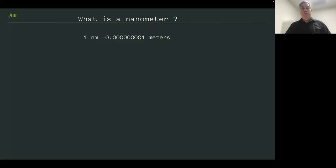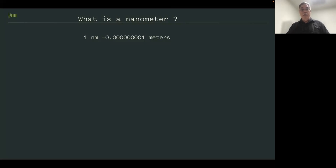Before getting into the subject matter, for those who may not be physical scientists, let me review what a nanometer is. A nanometer is 10 to the minus 9 meters — that's a zero point followed by eight zeros, then a one. This dimension is not within our daily experience, so I'll show the following. This is for high schoolers, but it's been very effective in teaching what a nanometer is.